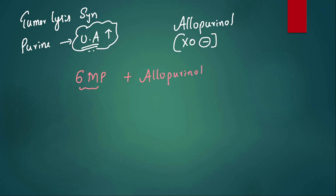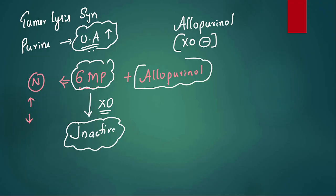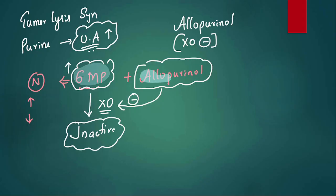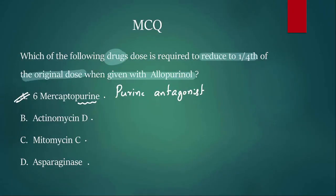Because allopurinol inhibits xanthine oxidase, 6-Mercaptopurine is not inactivated normally, causing its levels to rise and leading to toxicity. To prevent this, when combining these two drugs, we reduce the dose of 6-Mercaptopurine to one fourth of its original dose. The answer is A.